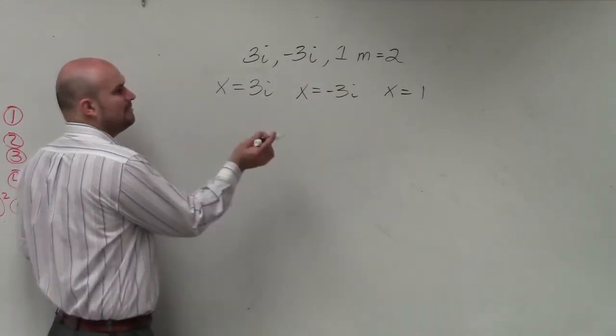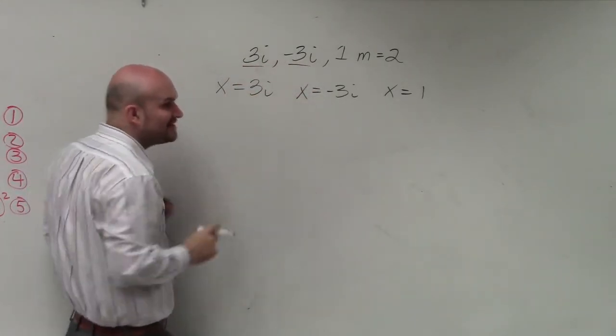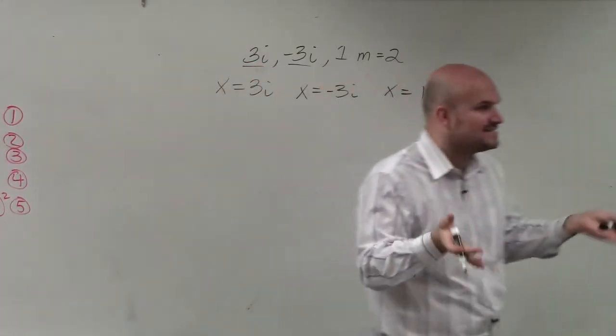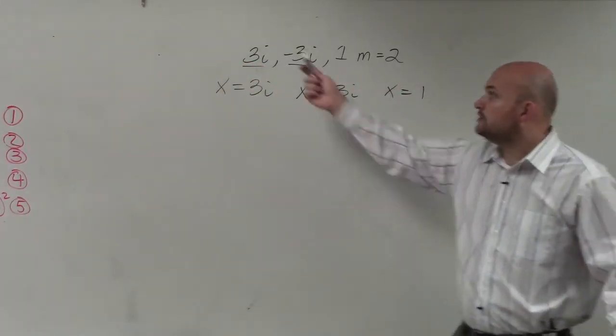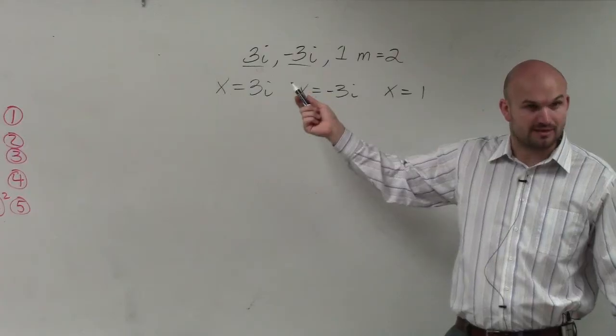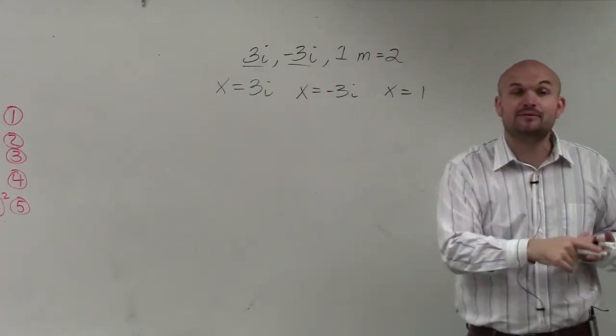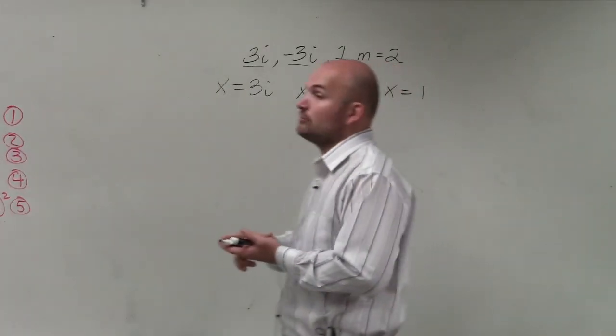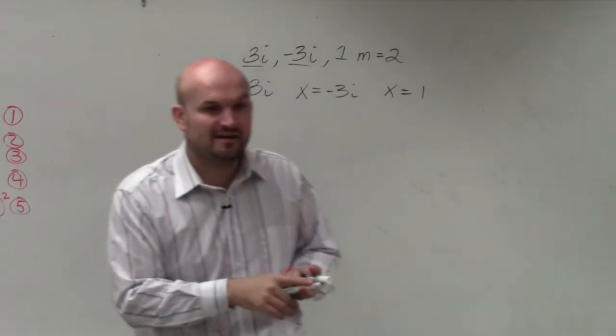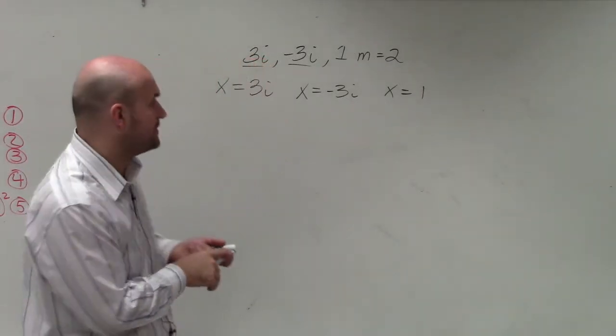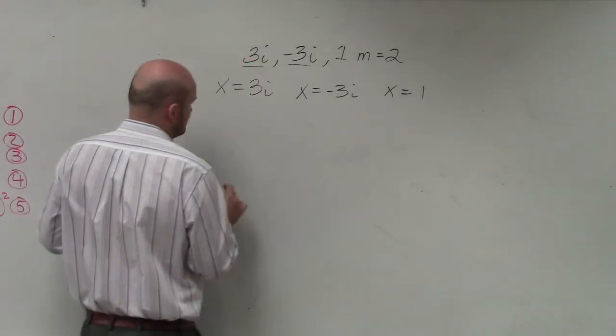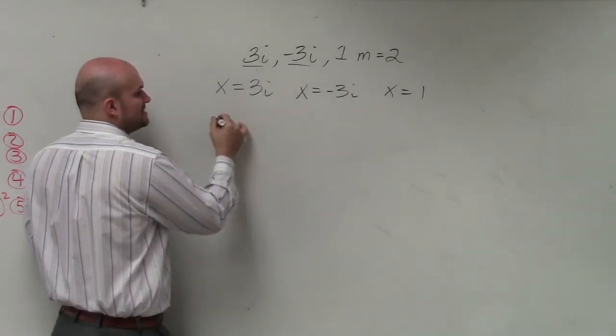A couple things to remember: whenever you have imaginary zeros, you remember there has to be the complex conjugate. You have to have the positive and the negative, right? Always. Same thing works with the irrational zeros. If I said the square root of 3, then we know that negative times square root of 3 would also be there. Now I can write these as factors.